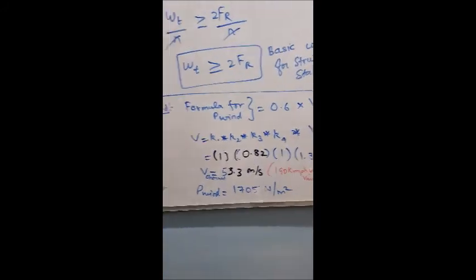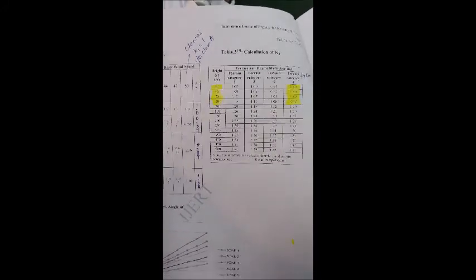Now what is this constant k2? We need to find the constant k2. This is the tabular column. In our case, k2 is for a building structure placed at around 10 meters of height.